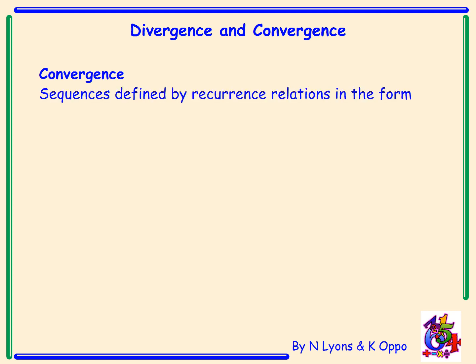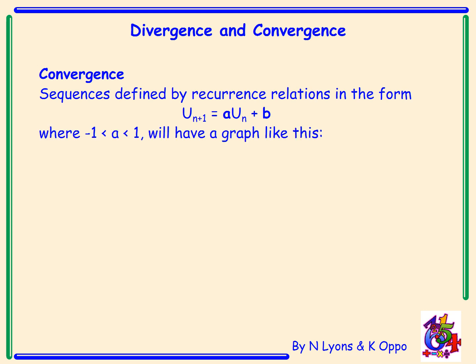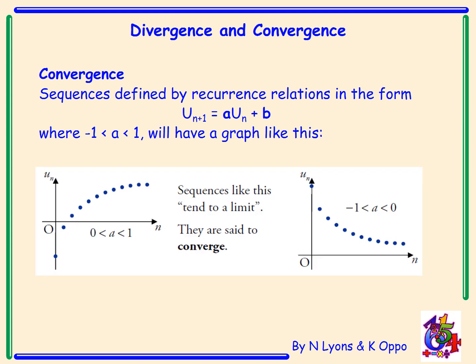Convergence: sequences defined by recurrence relations in the form u_(n+1) = a·u_n + b, where a lies between minus 1 and 1, will have a graph that looks like this. These sequences tend to a limit and they are said to converge.